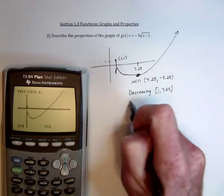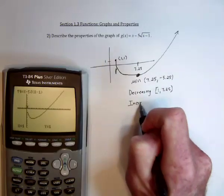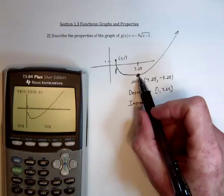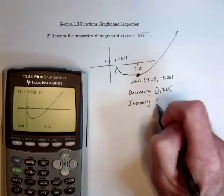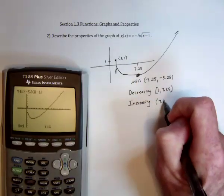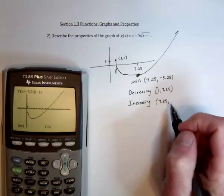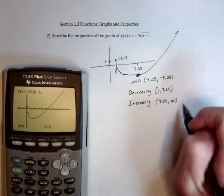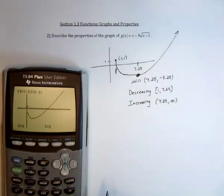And then, where is it increasing? Well, that's this right-hand side. So from 7.25, and again, not exactly equal to it, but as close as you want, so use a round parenthesis, and then forever to infinity. And there's a description of the graph.